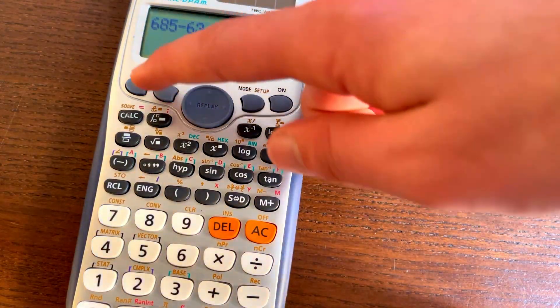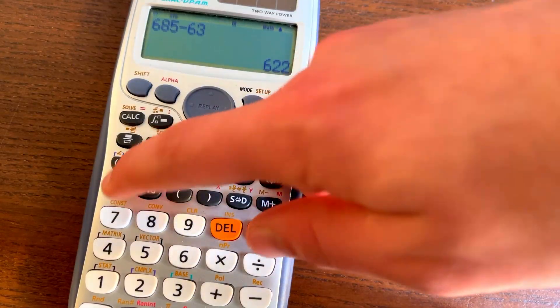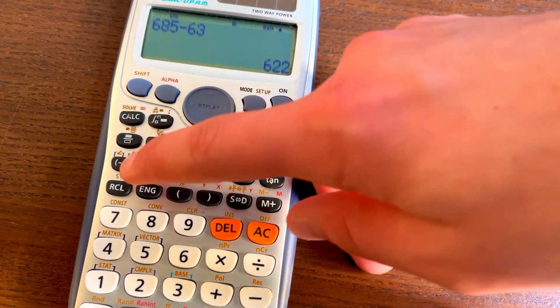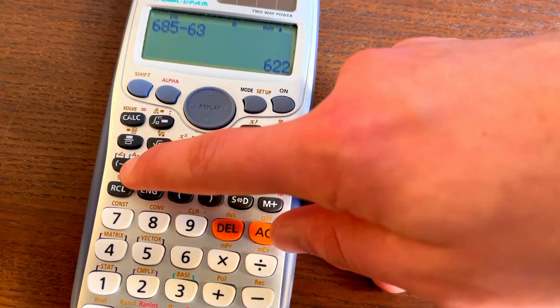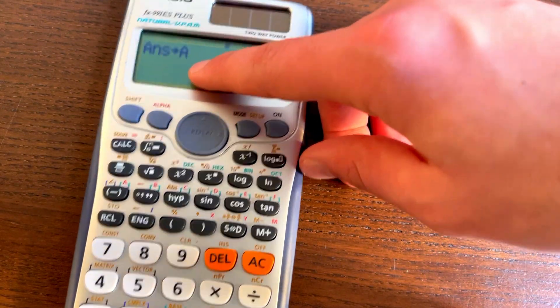We can store this for later by clicking shift right here, and then clicking STO right here. And then we can click on either any of these letters here, so you can see ABC. We can click on A, for example, and you can see the answer's been transferred to A.